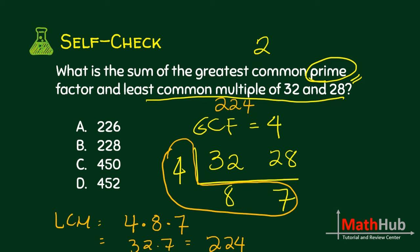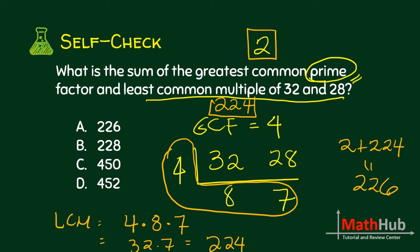So we just want to get the sum of 2 and 224. The answer is 226, letter A.